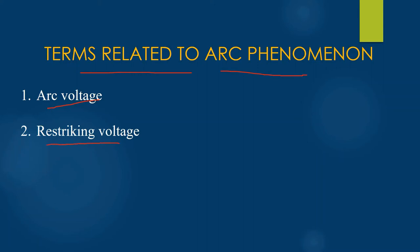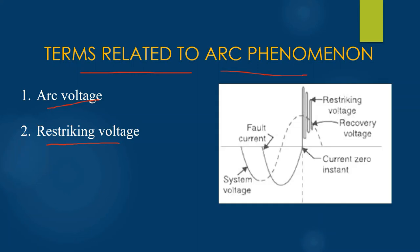Second, re-striking voltage. It is defined as the transient voltage that appears across the contacts of the circuit breaker at or near current zero during the arcing period. This is caused by the rapid distribution of energy between the magnetic and electric field associated with the plant and transmission line of the system. At the current zero situation, a high frequency transient voltage appears, and this transient voltage is known as re-striking voltage. As you can see in the diagram, these spikes are termed as the re-striking voltage — this is basically the transient voltage which is occurring during the arcing period.